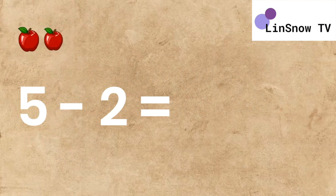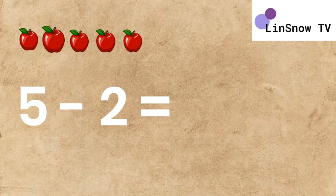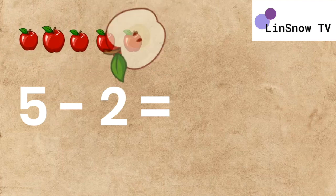5 minus 2. 1, 2, 3, 4, 5. Now let's subtract 2 objects from a total of 5 objects.